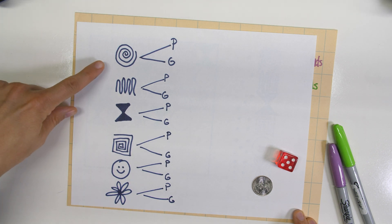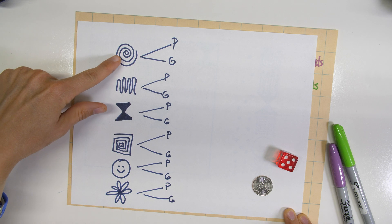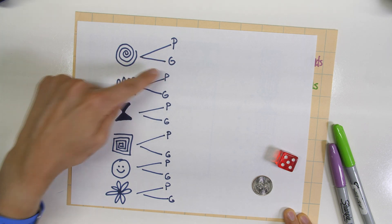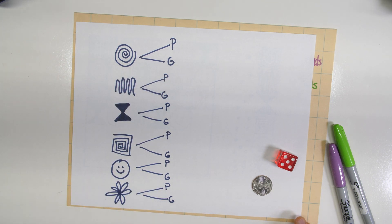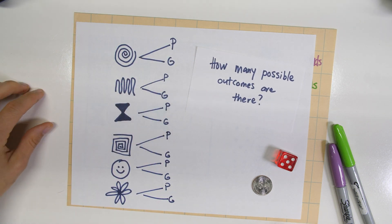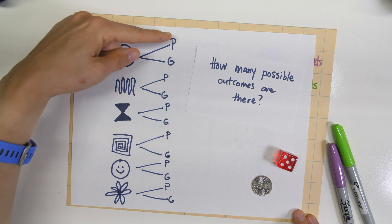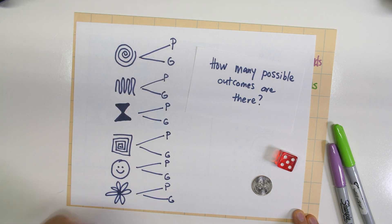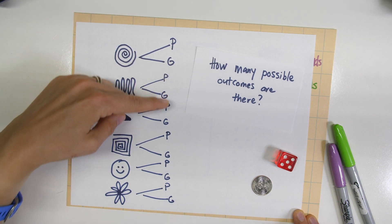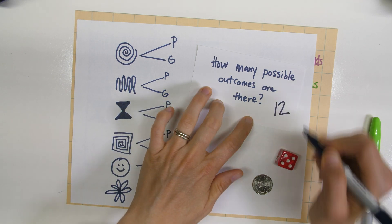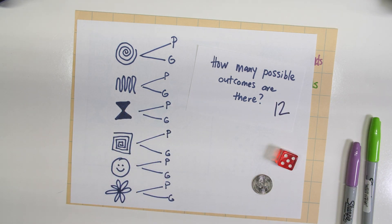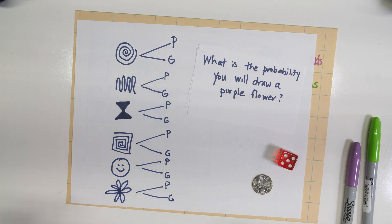And then I can read this. Now I have a diagram that's going to tell me all of my possible outcomes. So if I read it at the top, I could have a spiral drawn in purple, a spiral drawn in green, a wavy shape drawn in purple, all on down the line. So I can use this now to see how many possible outcomes there are. I can just count this second column in my tree diagram: one, two, three, four, five, six, seven, eight, nine, ten, eleven, twelve. So there are twelve possible outcomes in this artwork that I'm doing.